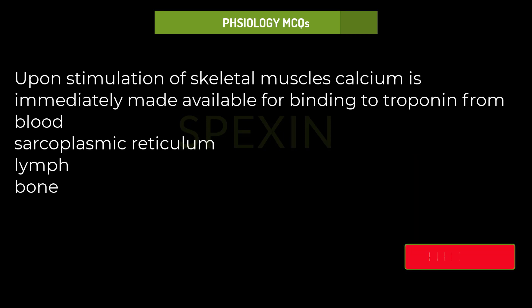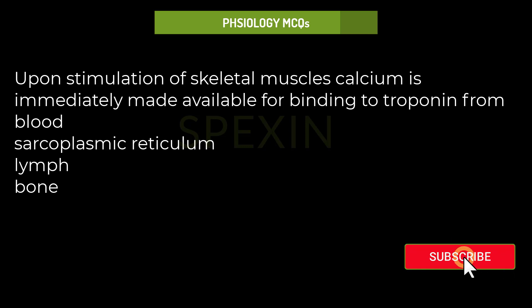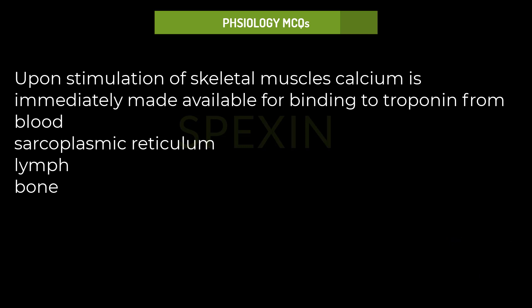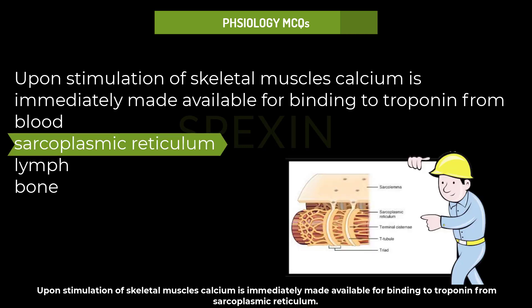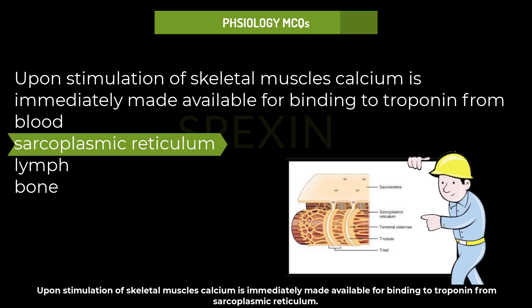Upon stimulation of skeletal muscles, calcium is immediately made available for binding to troponin from: blood, sarcoplasmic reticulum, lymph, or bone? The answer is sarcoplasmic reticulum. The sarcoplasmic reticulum is a complex network of specialized smooth endoplasmic reticulum important in transmitting the electrical impulse as well as in the storage of calcium ions.